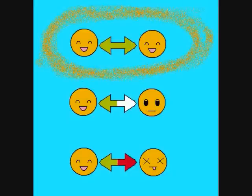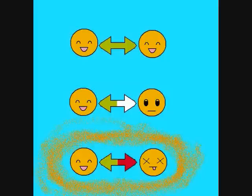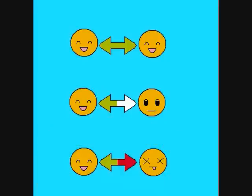Mutualistic symbiosis is when both species benefit. In commensalism, one species profits while the other remains largely unchanged. Parasitism entails one species benefiting at the other's expense. These are important to the field of biology because many communities cannot survive without working together in these ways. Let's go into more detail.